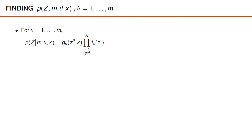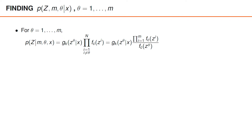Let us now look at the second case, which is when theta takes some number between 1 and m, meaning that the vector with index theta is an object measurement, whereas all the other measurements in z are clutter measurements. In this case, the distribution of z given m, theta and x can be written as a product: first, the distribution of column number theta, that is, the vector z theta, which is the object measurement, is gk of z theta given x. Second, we have the distribution over all clutter measurements, which is the product over fc of zi for all i except i equal theta. An alternative way to express this product is as a product over all i and then divide by the factor fc of z theta.